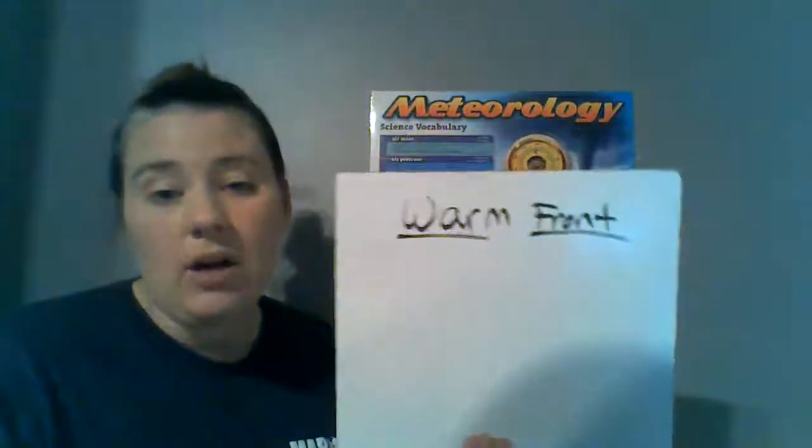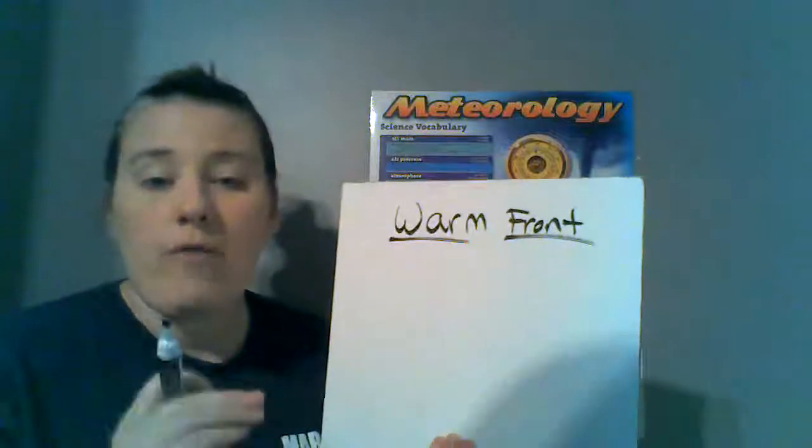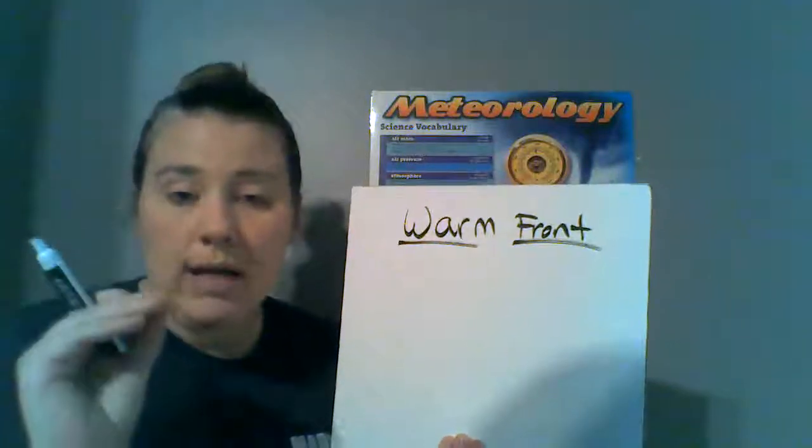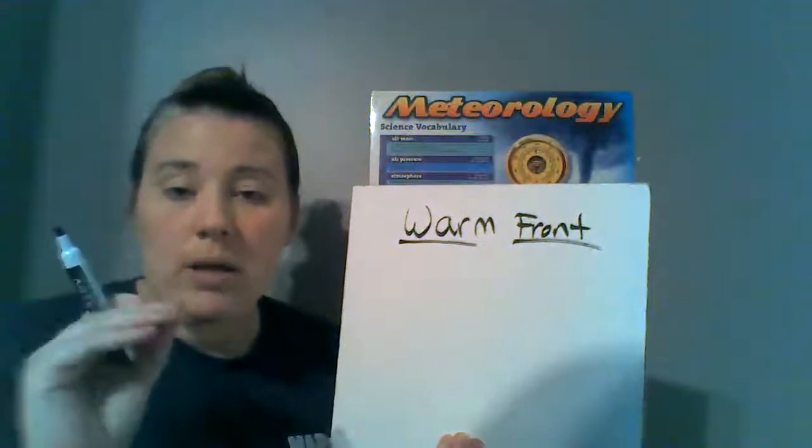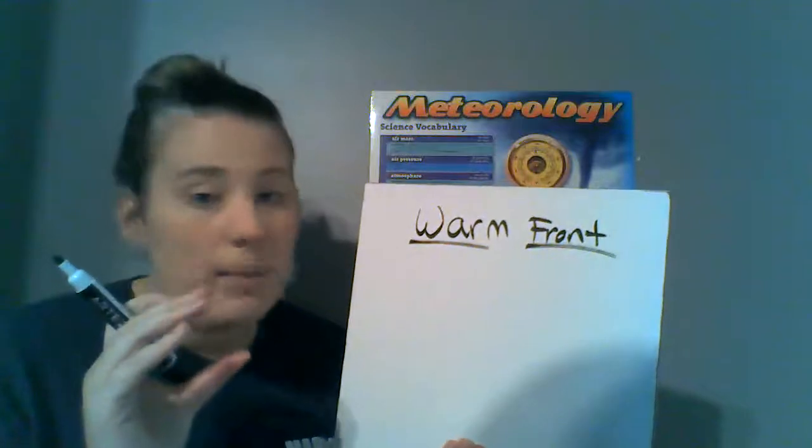One of them is going to push the other out of the way, which means one of them is moving. I have a trick on how to remember which one is going to be moving. We're going to start with a simple one — a warm front. A front is just the boundary line, the line in between when those two air masses meet, because they don't mix with each other.